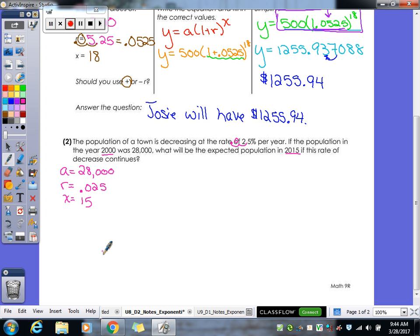So since this is decreased, are we going to use growth or decay? Decay. So a times 1 minus r to the x. And then we'll plug in our numbers. So 28,000, 1 minus 0.025 to the 15.